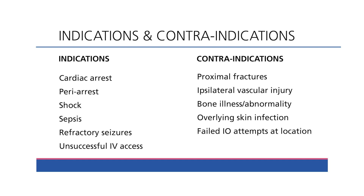Contraindications to IO access include proximal fractures, vascular injury on the same side, bone illness or abnormality such as osteogenesis imperfecta or osteomyelitis, overlying skin infections such as cellulitis, and failed IO attempts at that location on the ipsilateral limb or side.